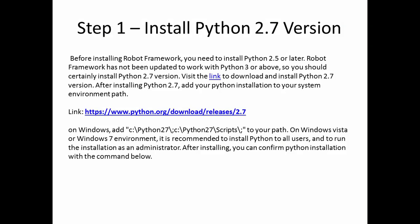Step 1: Install Python 2.7 version. Before installing Robot Framework, you need to install Python 2.5 or later. Robot Framework has not been updated to work with Python 3 or above, so you should certainly install Python 2.7 version. You can visit the link below to download and install Python 2.7. After installing Python, add your Python installation to your system environment path.